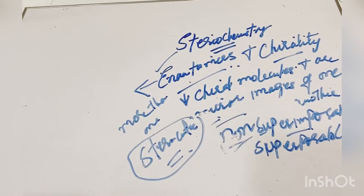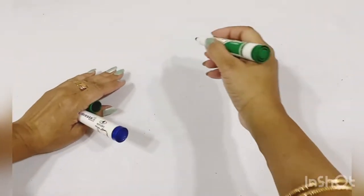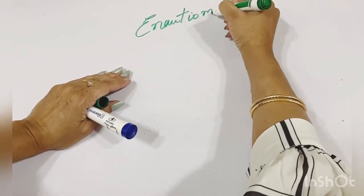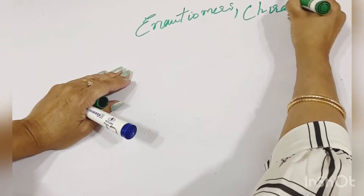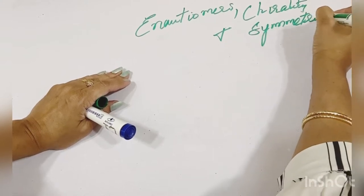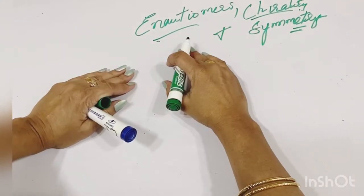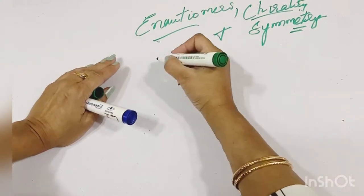What is a stereo center? I have explained in previous sections what a stereogenic center or stereo center is. So let's start with the main headings: enantiomers, chirality, and symmetry — the main topics we are going to discuss today.